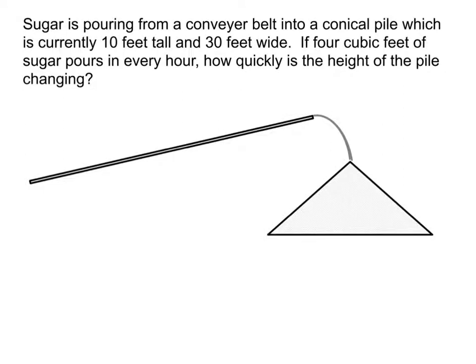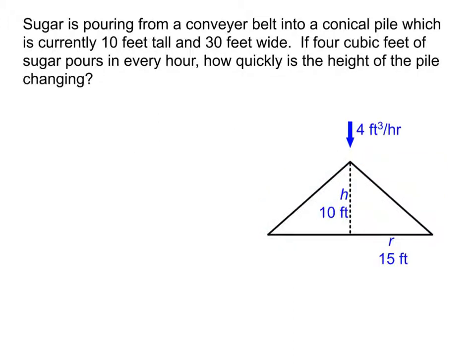First, we visualize what's happening in the picture: a conveyor belt is pouring sugar into a big conical pile. We label it, but really what we care about is the triangle and the pieces that form the cone. Notice that the radius is not 30 — the width of the entire pile is 30, which means the radius is 15. Make sure that's what you're using going forward.